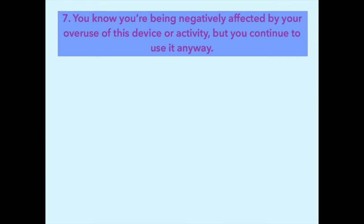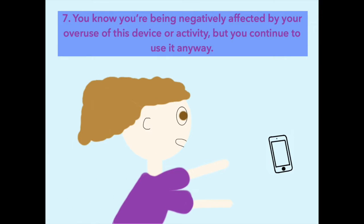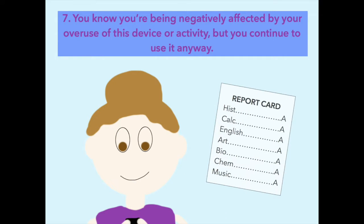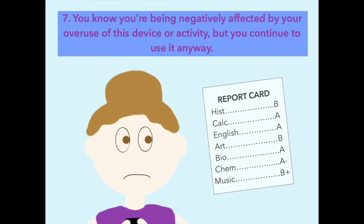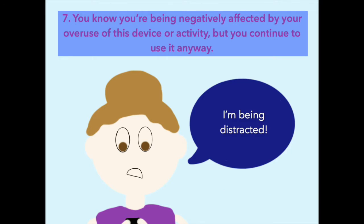7. You know you're being negatively affected by your overuse of this device or activity, but you continue to use it anyway. It's like you can't stay away. Let's say you notice that your grades have been suffering since you got your new phone or Instagram account. You know you're being distracted, but you can't seem to stay away from your phone. This may be addiction.